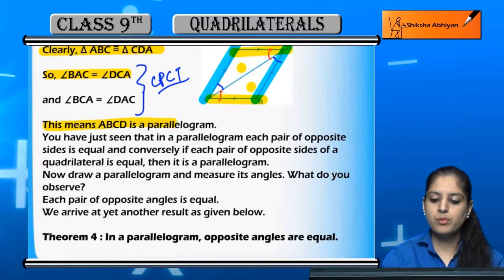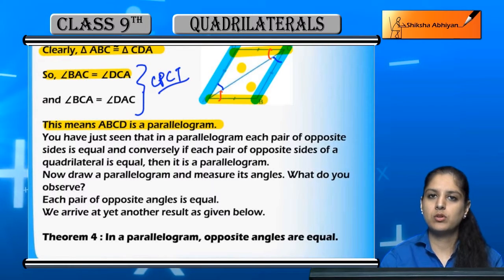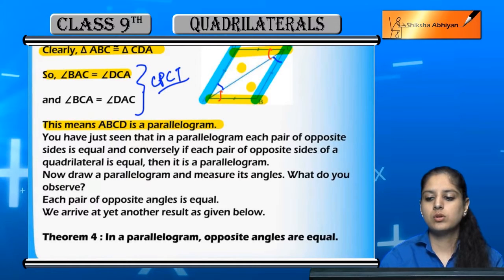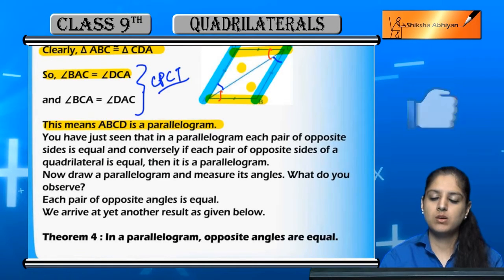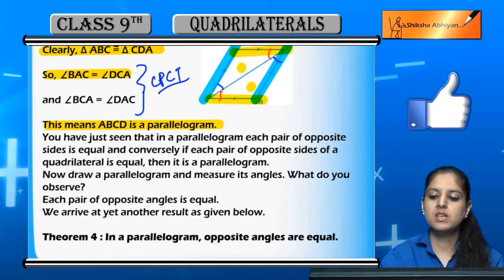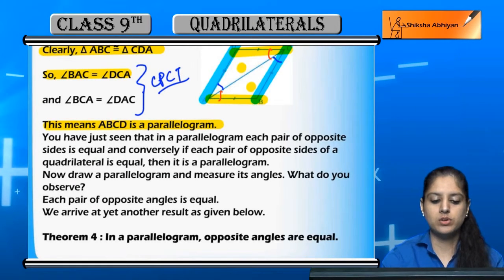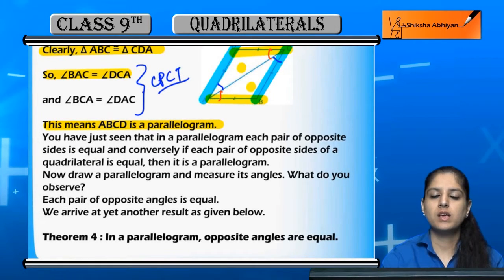So this proves that AB is parallel to CD. Why? Because if the two alternate interior angles are equal, the sides will be parallel. So ABCD is proved to be a parallelogram.